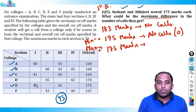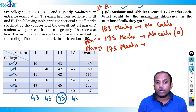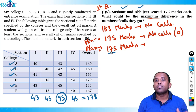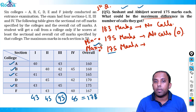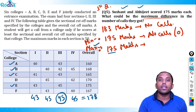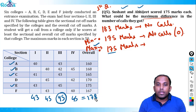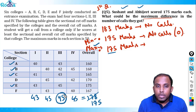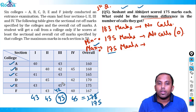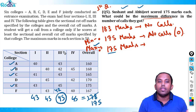To also get calls from D and F, he would need 43 in section 1, 45 in section 2, 45 in section 3, and 45 in section 4 — totaling 178. But we only have 175 marks, so he cannot get calls from all six colleges. Since six is not possible, try for five. To reduce from 178 to 175, I need to cut 3 marks. Reducing 3 marks from section 3 (e.g., scoring 42) eliminates colleges A, C, and E — that is too costly.